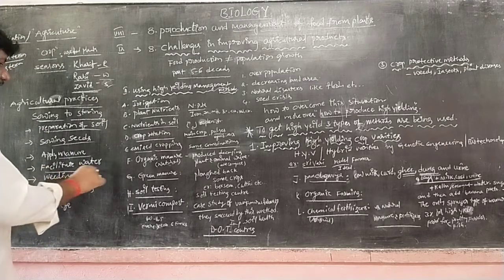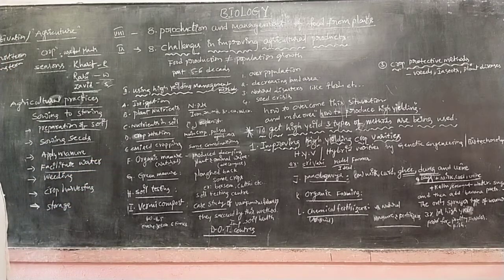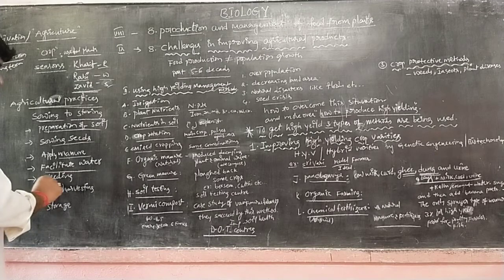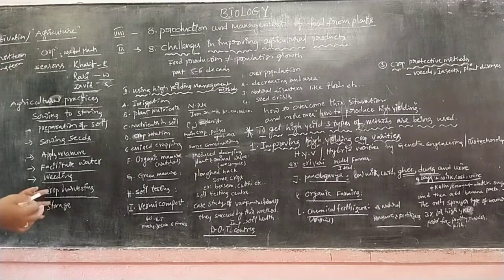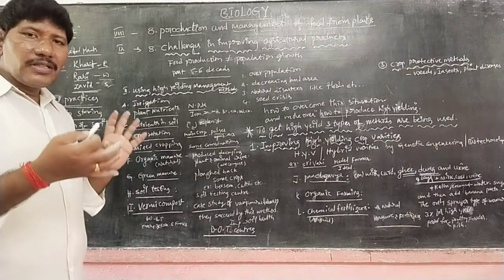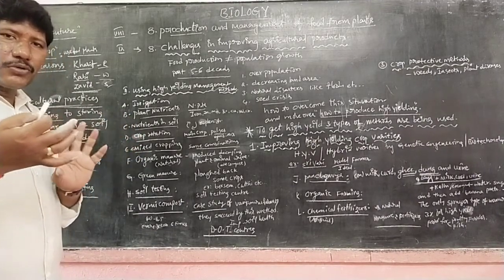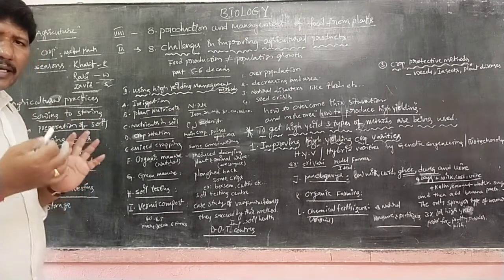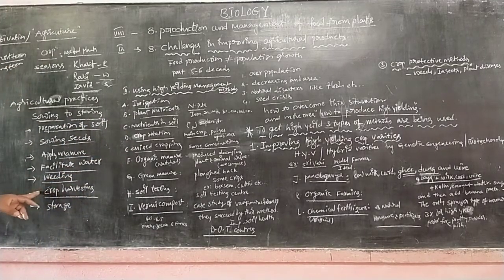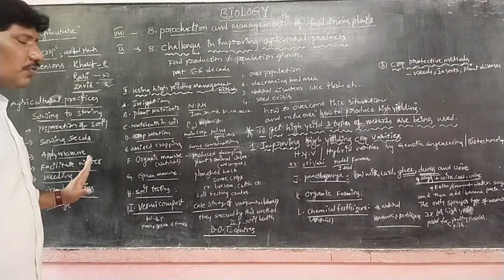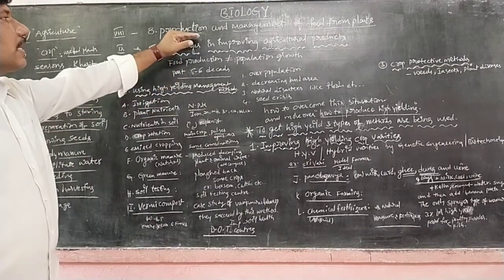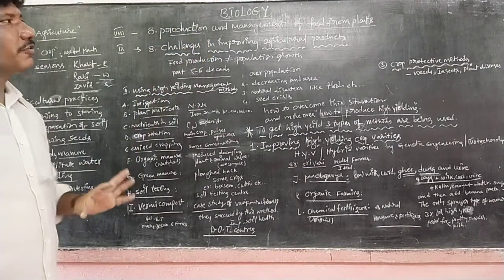Some micronutrients are required. Next, facilitate water supply — irrigation is very important. Next, remove weeding — unwanted plants are removed. Next, crop harvesting: after the freely grown plant completes its growth, when the crop is ready for yielding, we harvest and cut the plants, and store until the next crop. This is the previous knowledge we gain from the eighth class, eighth chapter: production and management of food from plants.